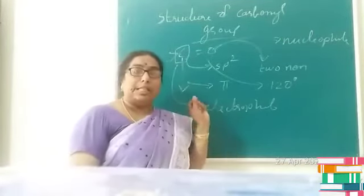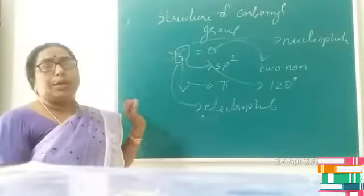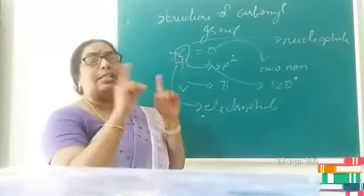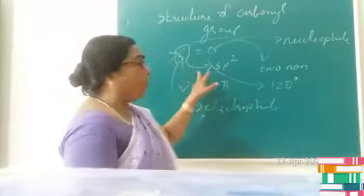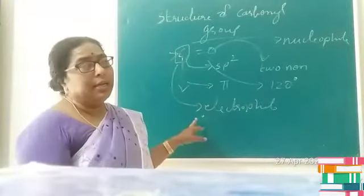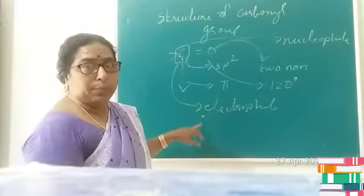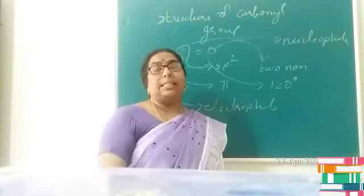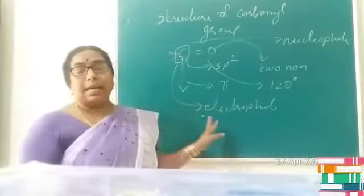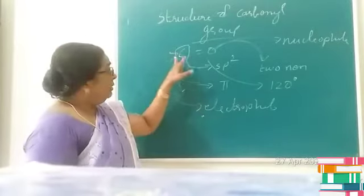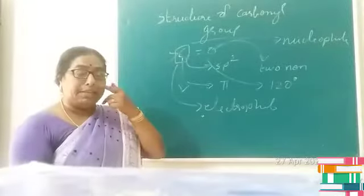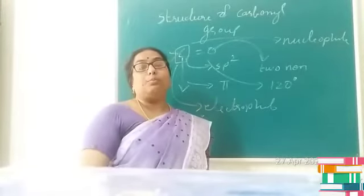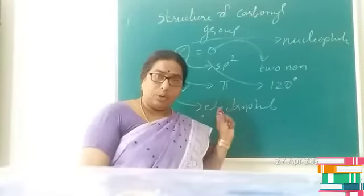The carbonyl carbon undergoes sp2 hybridization, so it forms three sigma bonds with the neighboring atoms. All three bonds lie in one plane and the pi bond lies below the plane, with bond angles of 120 degrees giving a trigonal planar structure. Due to the difference in electronegativity between carbon and oxygen, this bond is polar in nature.